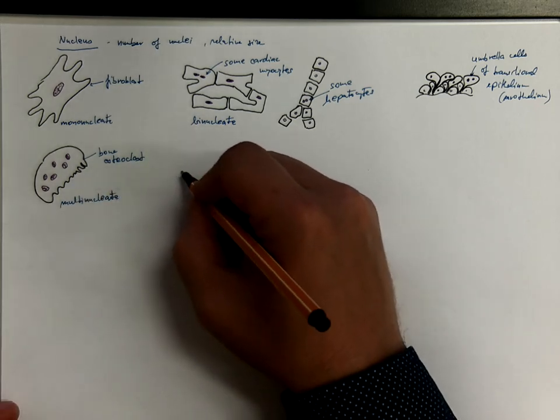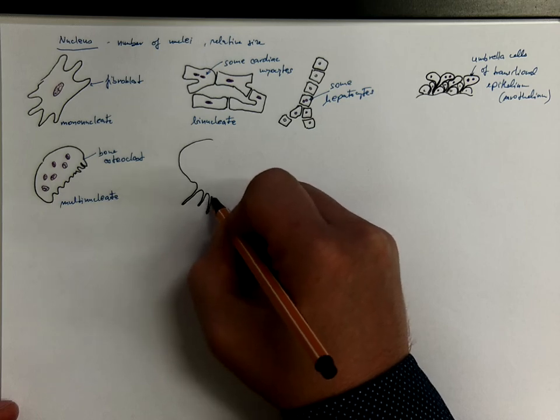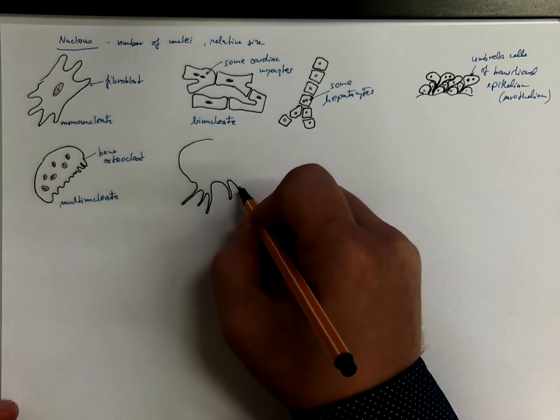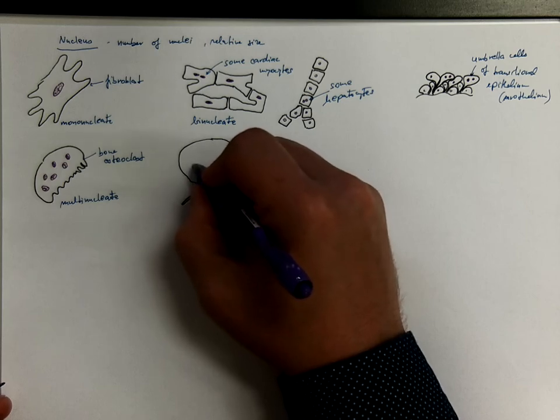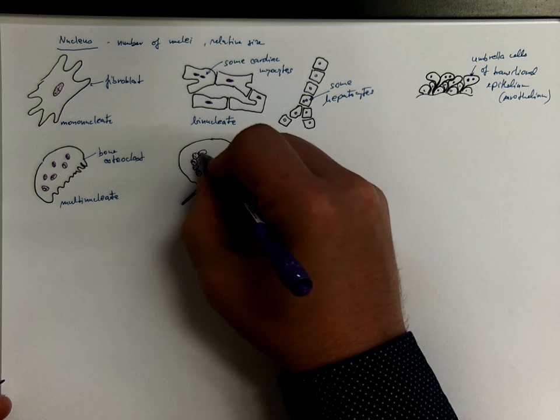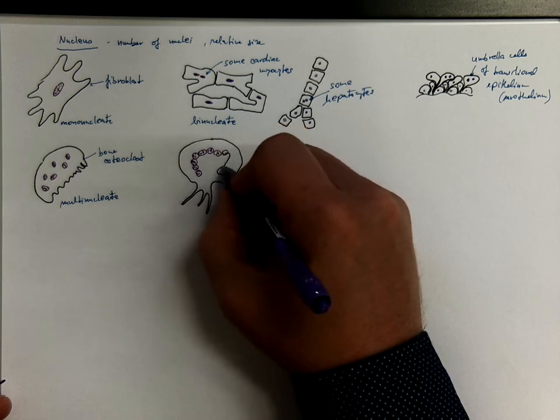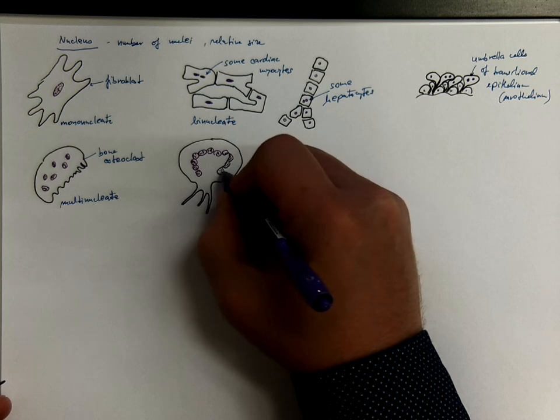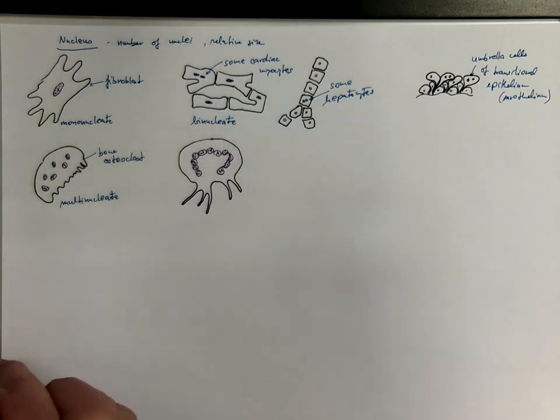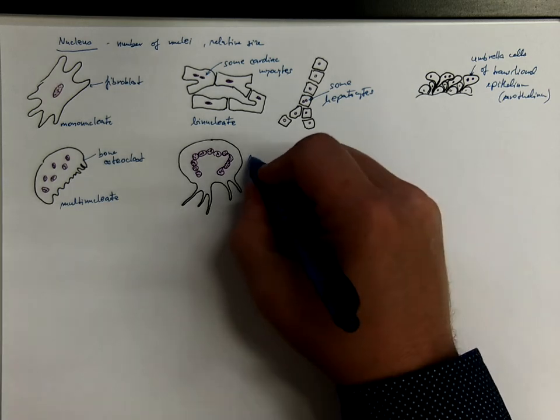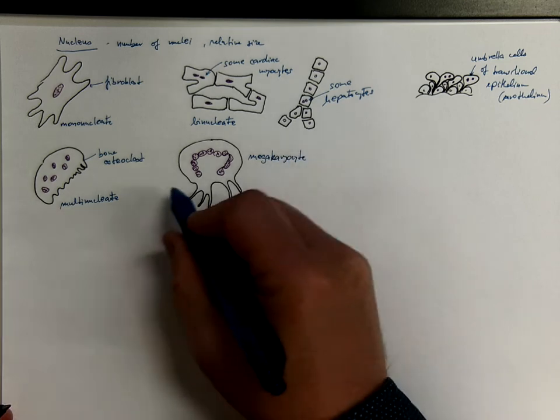Another example would be a cell that is producing blood platelets in the bone marrow. It has these processes that become fragmented as thrombocytes. But the nucleus, there is a whole ring of nuclei. They could be even partially connected with each other, not completely separated. So the cell underwent division of cell nucleus without dividing the cell. So these are megakaryocytes. That's another example of multinucleated cell.